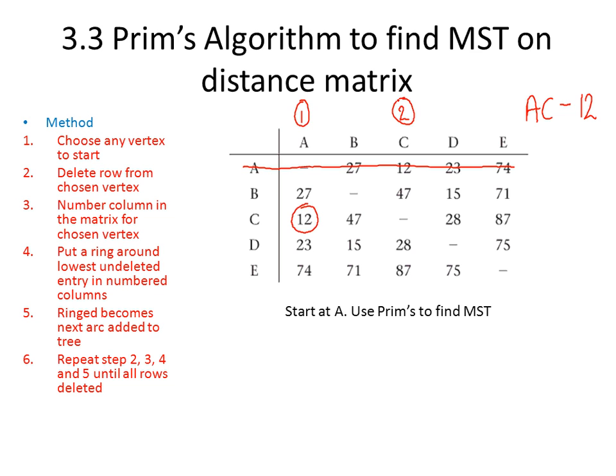Obviously if we're at C, we can't travel to C, so we cross it out. Now we're looking for the smallest number in both of these columns with numbers on. The smallest number in both of those columns is 23. This part of the matrix is A to D, which is 23.